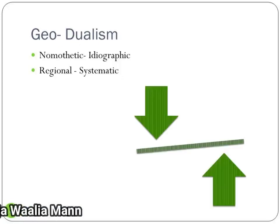One topic that is very frequently asked in exams is: what is the meaning of dualism, or why is geography subjected to dualism? Dualism refers to two things at the same time — meaning in one concept you are understanding two dimensions, and both are perhaps opposite to each other.